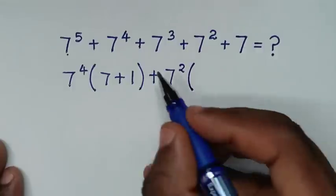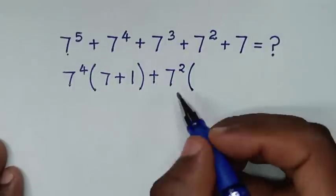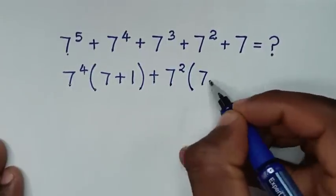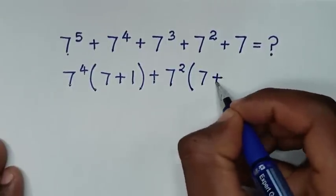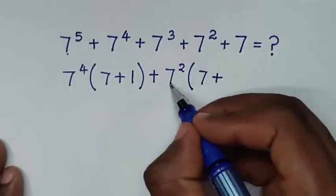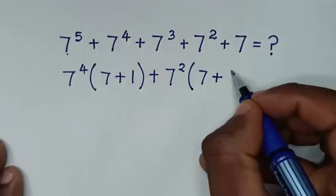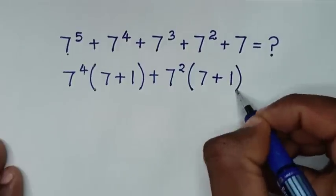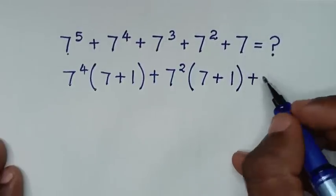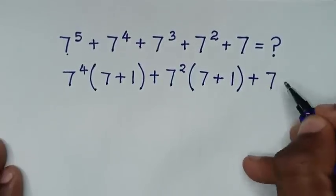So we will take 7 power 2 out of bracket, then 7 power 3 divided by 7 power 2 is 7, then plus 7 power 2 divided by 7 power 2 is 1, then plus 7.